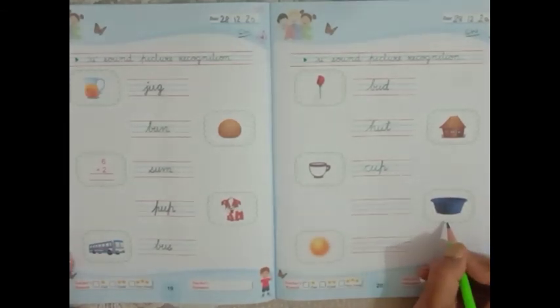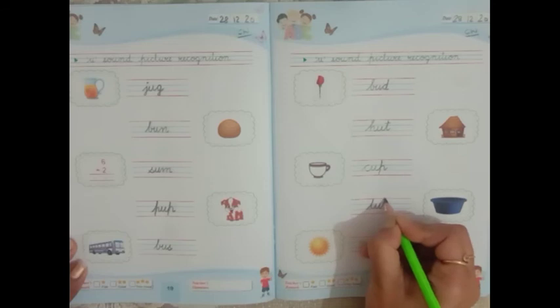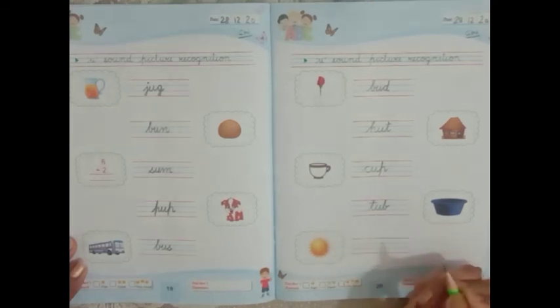What is this kids? This is a tub. T-U-B. Tub. This is a tub.